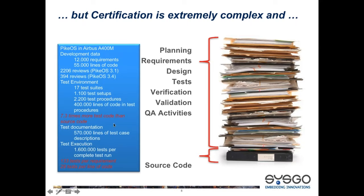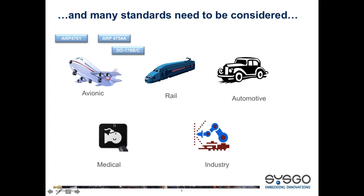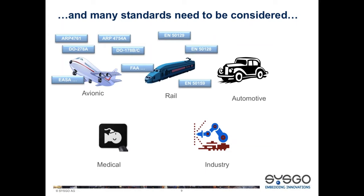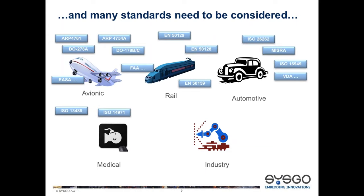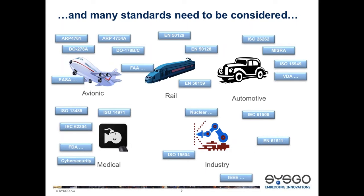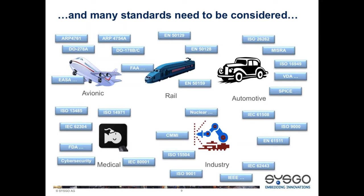Certification is quite complex. It's not writing the source code that is the complex part — it's all the things you have to do around it. Planning, requirements, and verification is far more work than the actual source code itself. From our certification of the Airbus A400M, more than 7.3 times more test code than source code was written. There are many standards — avionics, rail, automotive, medical — each with their own variant of certification standards.